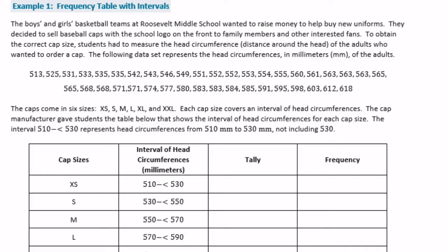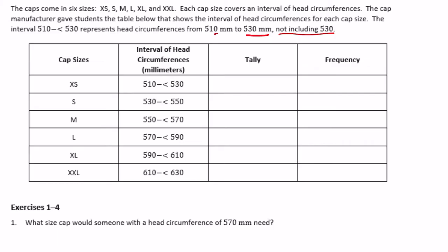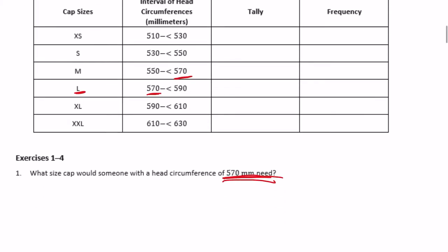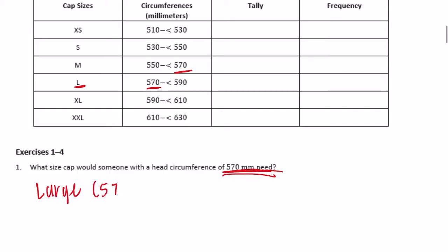The cap manufacturer gave students a table showing the interval of head circumferences for each cap size. The interval 510 to less than 530 represents head circumferences from 510 millimeters up to but not including 530. So someone with a head circumference of 570 millimeters would need a large cap, because the large range is 570 to less than 590. It wouldn't be medium because medium is 550 to less than 570.